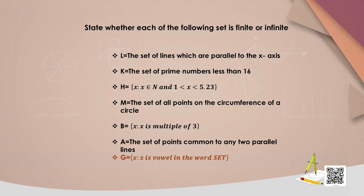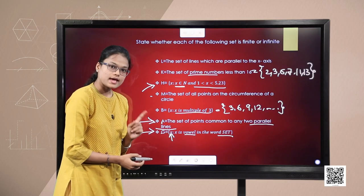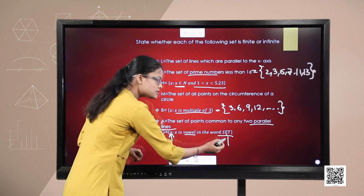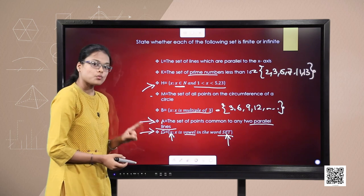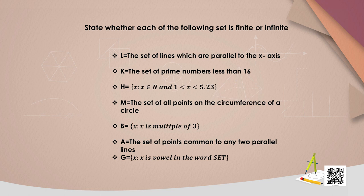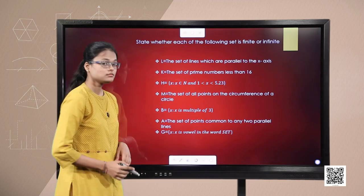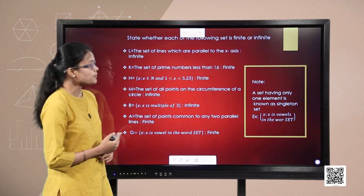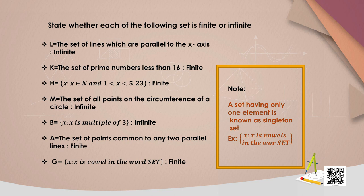The last set G consists of all vowels in the word 'set'. The word 'set' has three letters: S, E, and T. The only vowel is E, so G has one element. G is a finite set. Students, observe one more type from this example — a singleton set. A set having only one element is known as a singleton set.